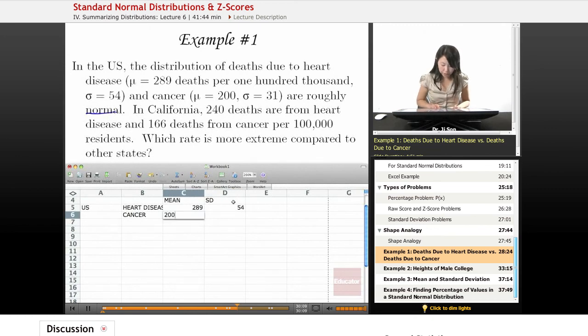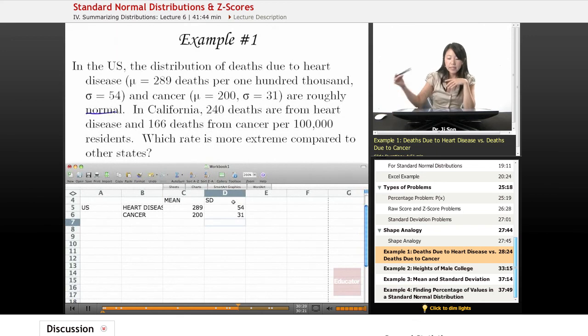For cancer, it's 231. We want to know how extreme the California deaths are. It's hard to compare with just the numbers because even though 240 deaths is less than 289 and 166 deaths is certainly less than 200, we're wondering how much less? How far away from the mean are you?